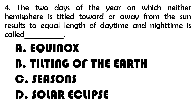Number 4. The two days of the year in which neither hemisphere is tilted toward or away from the sun, resulting in equal length of daytime and nighttime, is called blank. A. Equinox. B. Tilting of the Earth. C. Seasons. D. Solar Eclipse.